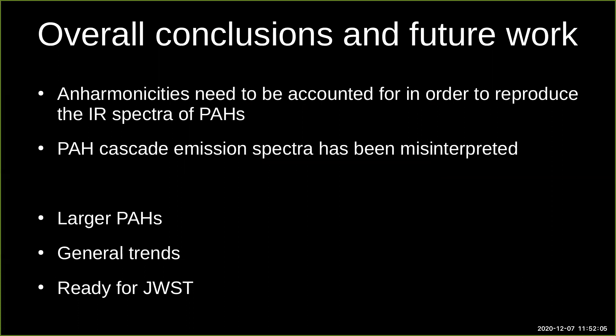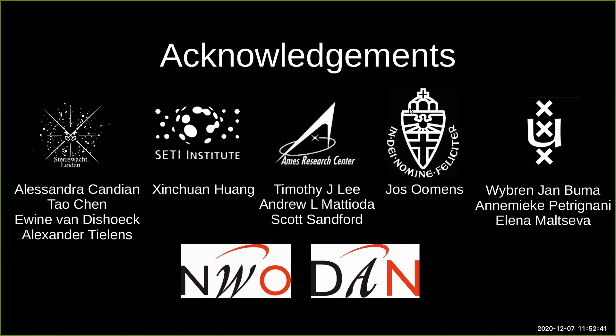The overall conclusions: anharmonicities are needed to reproduce the infrared spectra of PAHs, and this PAH cascade emission spectrum may have been misinterpreted until now. We want to go to larger PAHs and look at general trends, because as you go larger the number of PAH species literally explodes — hundreds of thousands of different species — but you want to model the general trends. We hope to be ready for the James Webb Space Telescope — that is, if the James Webb Space Telescope will be ready for us. Thank you for your time.